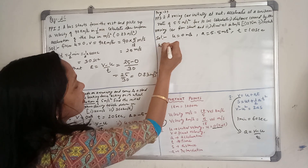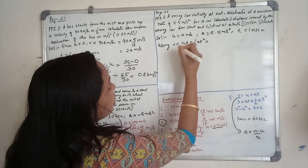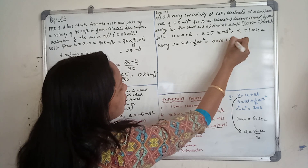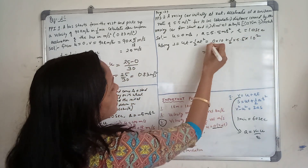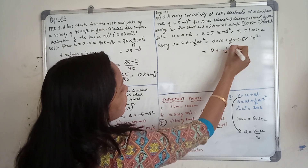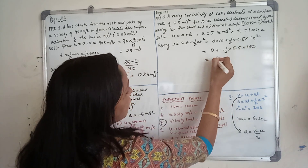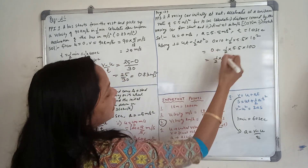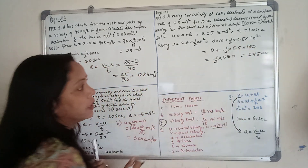For distance covered, use S = UT + ½AT²: S = (0)(10) + ½ × 5.5 × 10² = 0 + ½ × 5.5 × 100 = ½ × 550 = 275 meters.